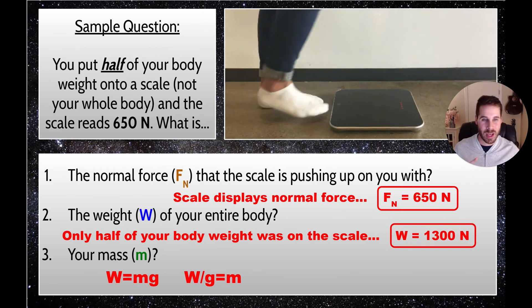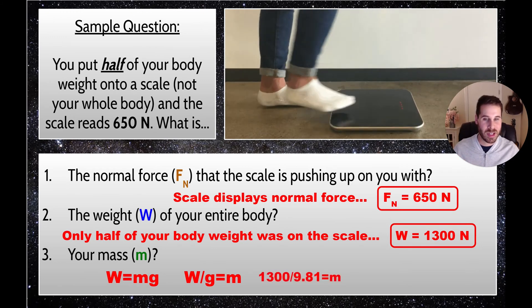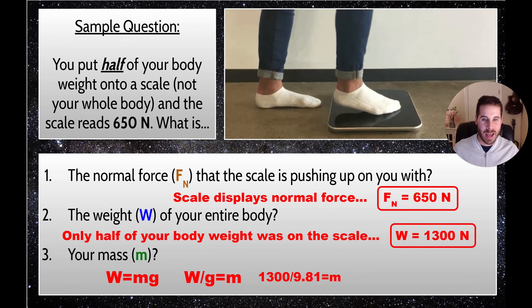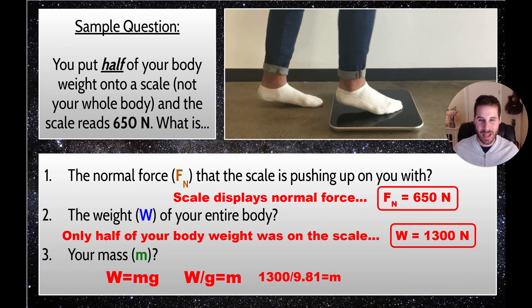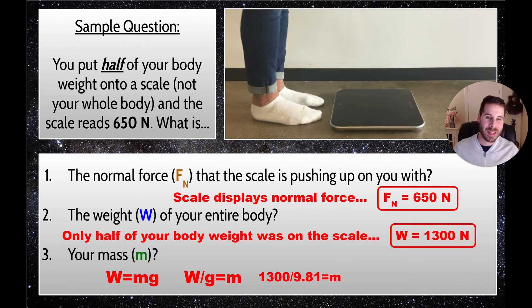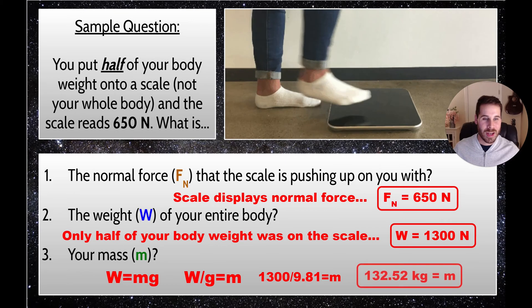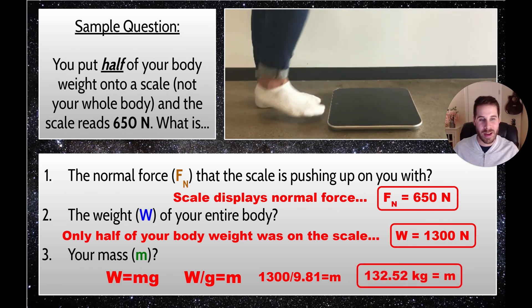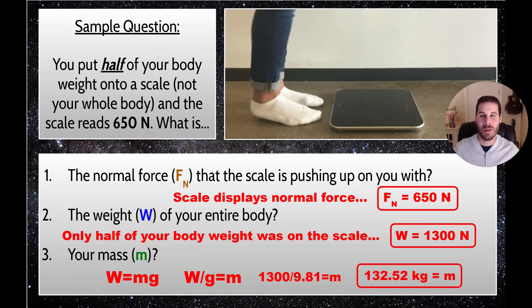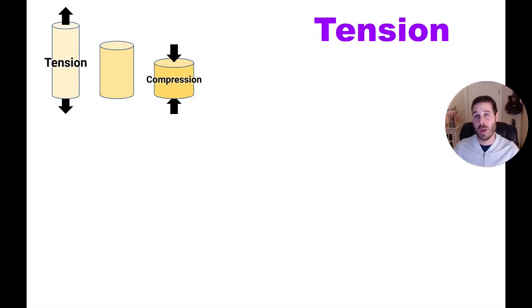Plugging in the numbers: weight is 1300 newtons divided by the acceleration due to gravity of 9.81 m/s², giving a mass of 132.52 kilograms, which is actually rather large. That brings us from normal force to the other type of force we're going to discuss today: tension.